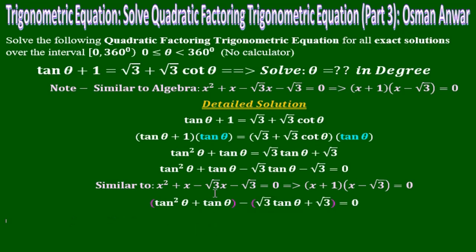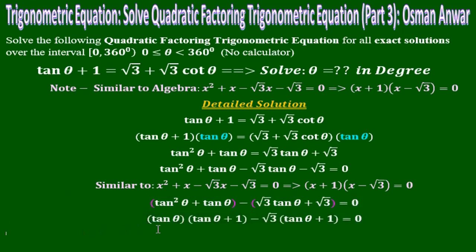Group tan²θ and tan θ as one group, and √3·tan θ and √3 as another group, with a minus between them. Factor tan θ from the first group: tan θ(tan θ + 1). Factor √3 from the second group: minus √3(tan θ + 1) equals 0.